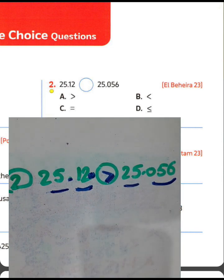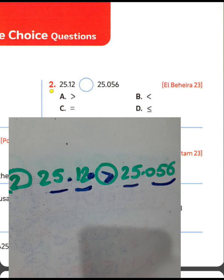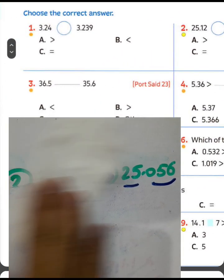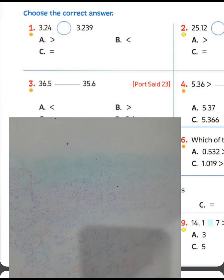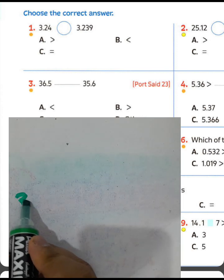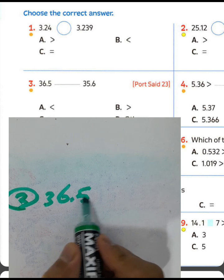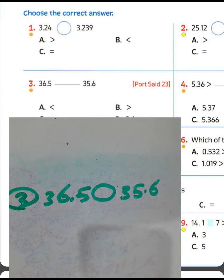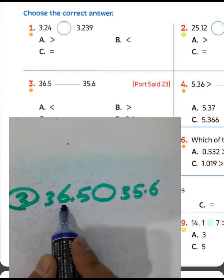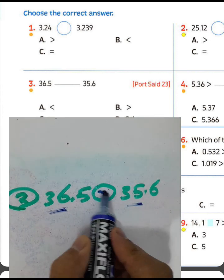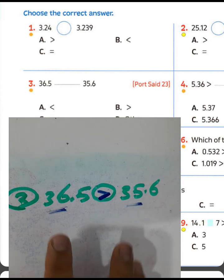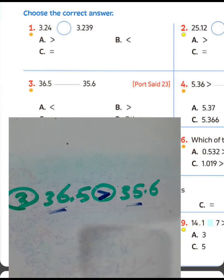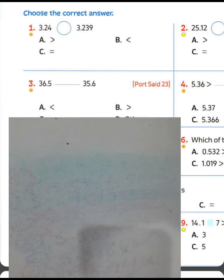So choose the greater-than sign, letter A, for question two. Question number three: 36.5 or 35.6 — look here, 36 is greater than 35, so choose the greater-than sign. The first step is always to compare from the left-hand side.